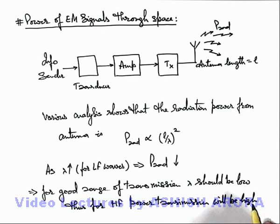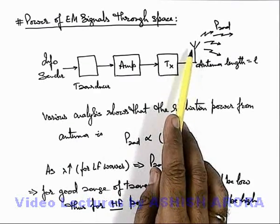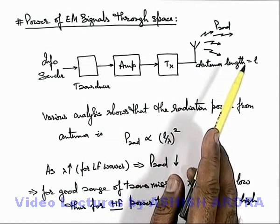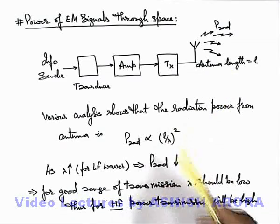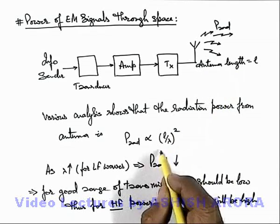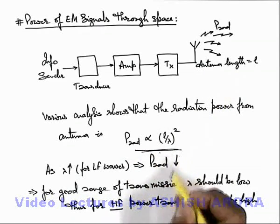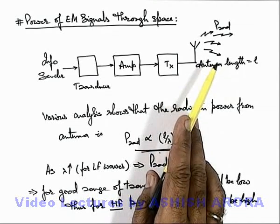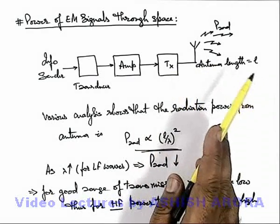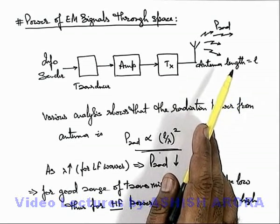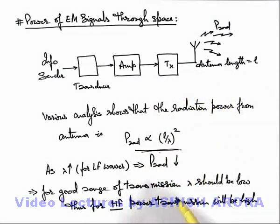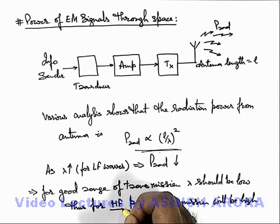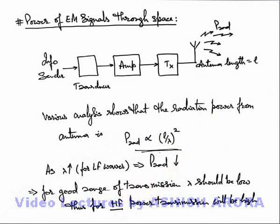So in previous section also we have studied for high frequencies the size of antenna is quite practical for transmission of signals into space. As well as here we can see, based on this relation, for high frequencies the radiated power of electromagnetic signals will also be high, so the range of communication system will also increase. So for space transmission, high frequencies are used for communication of signals.